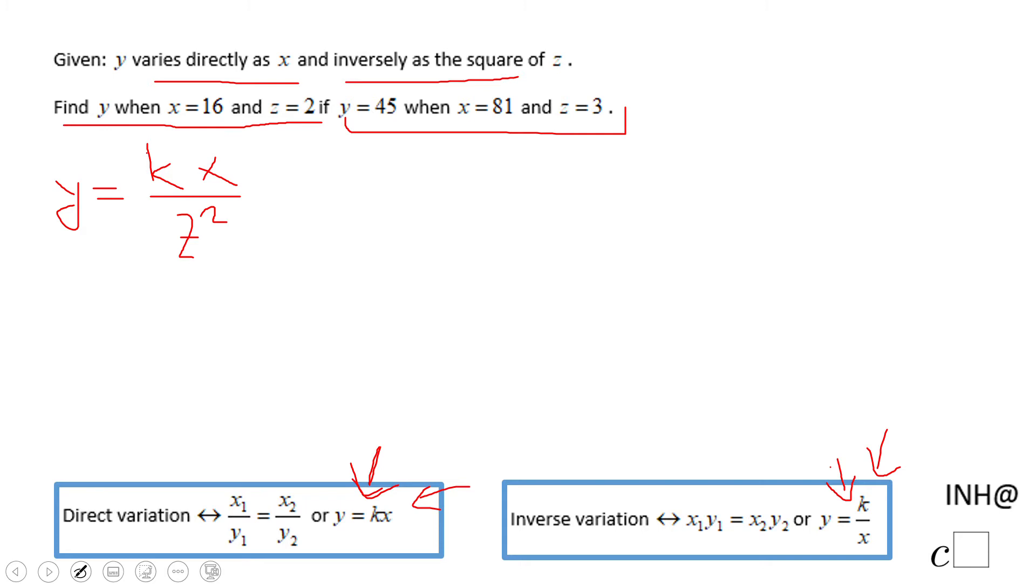So that one says y is 45. k is the value we need to find when x is 81 and z is 3. So in this case here we need to solve for k, but first I think we can simplify here.